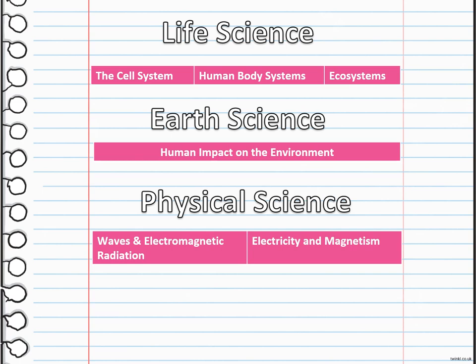Your book is divided into three subdivisions of science, which is life science, earth science, and physical science. We'll start with life science. We're going to talk about the cell system, human body systems, and ecosystems.